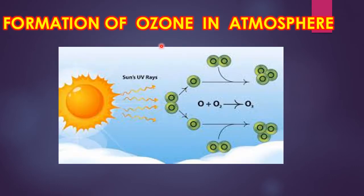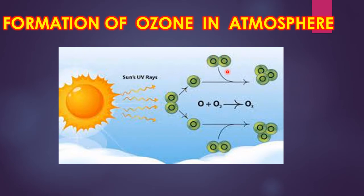Now let's see diagrammatically the formation of ozone in the atmosphere. A molecule of oxygen consisting of two atoms separates to form two individual atoms — the atomic form of oxygen. When these atoms separately combine with one more oxygen molecule each, two molecules of ozone are formed.